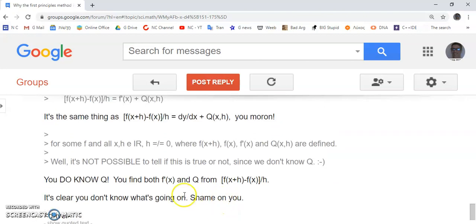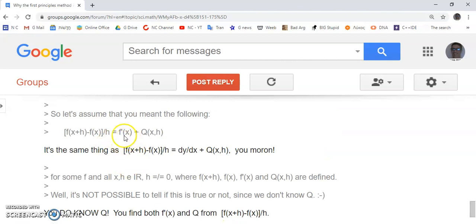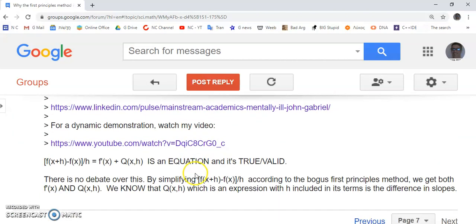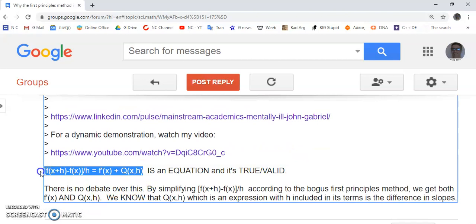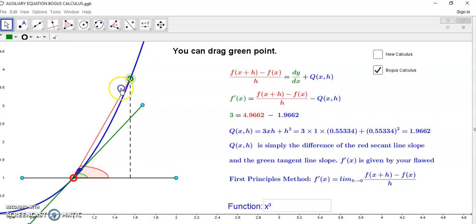And he also had problems realizing that f prime of x is the same as dy/dx. And so, in any case, the skinny of it all is that this here is an equation, and it's true or valid. There is no debate over this. This is shown by the geometry in here. See?